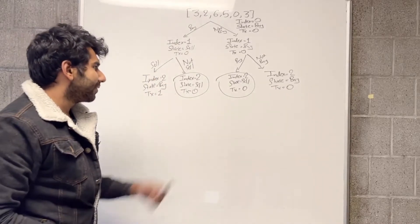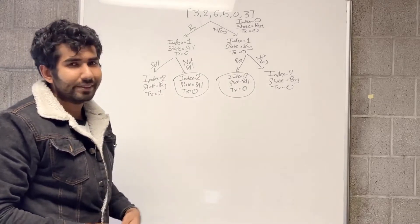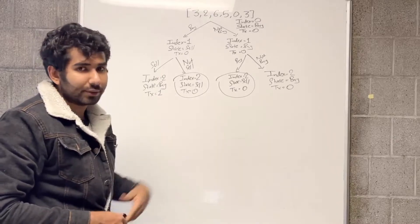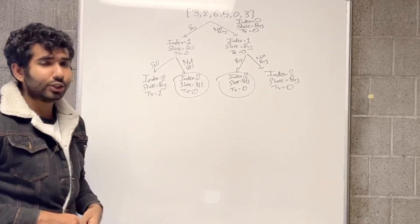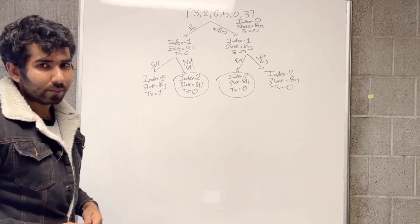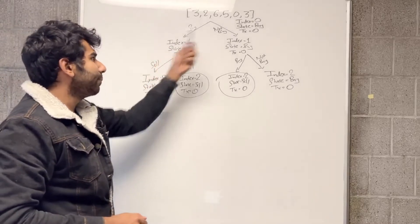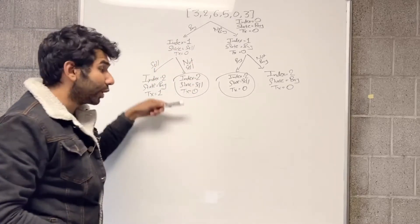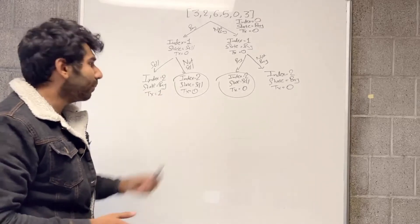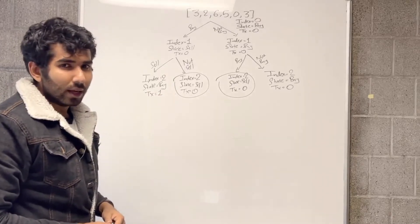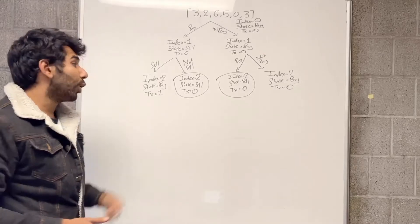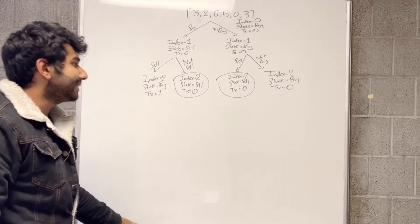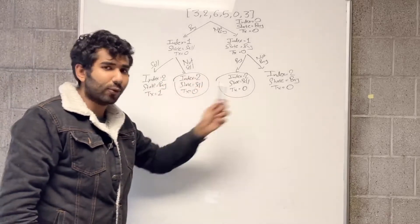Some of you might notice that these two nodes are the same — we are at index 2, the state is sell, and the transaction count is still 0 for both. Even though we bought at different points, the recursion tree further down will be the same for both nodes. So we can calculate for one of them, save that result, and directly reuse it for the other.